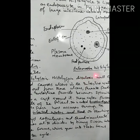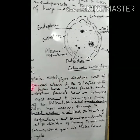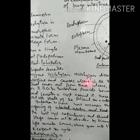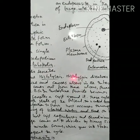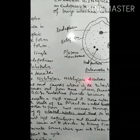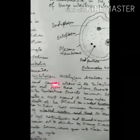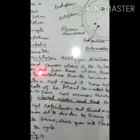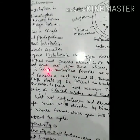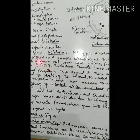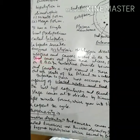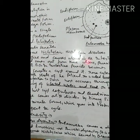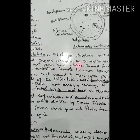This lobopodia secretes an enzyme called histolysine. Histolysine dissolves the walls of the intestine, causing ulcers in the intestine. Blood then comes out from the walls of the intestine, causing these ulcers.